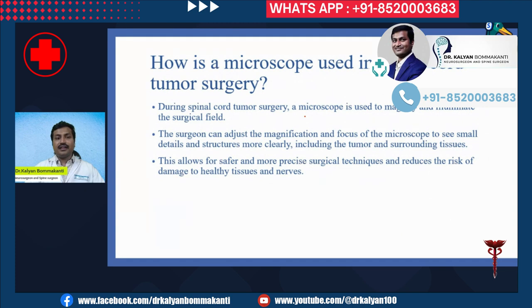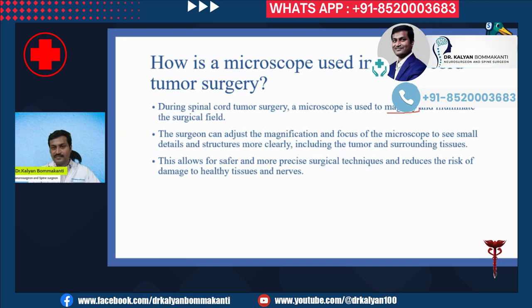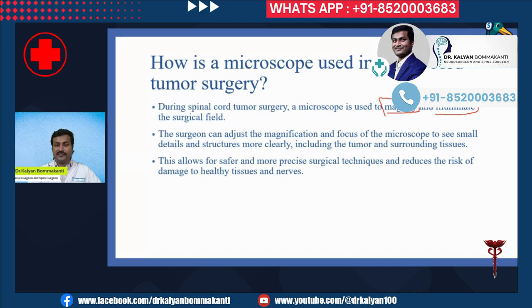How is a microscope used in spinal cord tumor surgery? A microscope mainly performs two functions: it magnifies and illuminates the surgical field. With magnification, the surgeon can adjust the magnification and focus to see small details and structures more clearly, including the tumor and surrounding tissues. This allows for safer and more precise surgical techniques, reducing the risk of damage to healthy tissues and nerves.